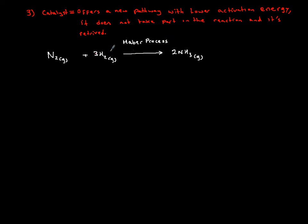The catalyst, I can put it on top of the arrow or as a reactant, it's iron powder, and I can retrieve it as the product. So this is what we mean by catalyst.